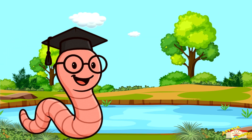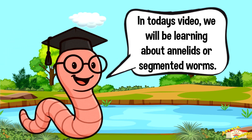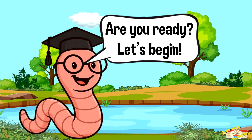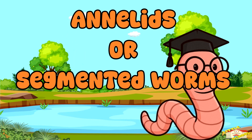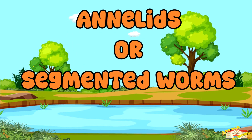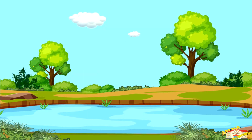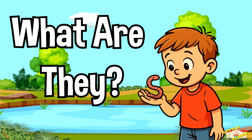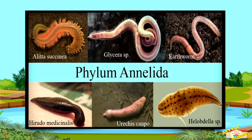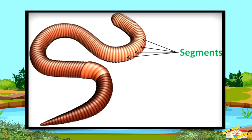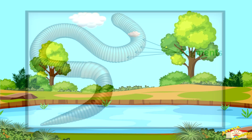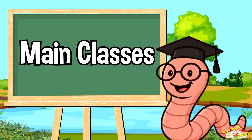Hey kids! In today's video we'll be learning about annelids, or segmented worms. Are you ready? Let's begin. Annelids are a type of animal that have long, soft, segmented bodies. They have body parts that are repeated in segments. Let's go over the main classes of annelids.